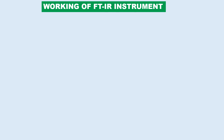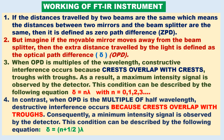Let us see the working of the FTIR instrument. If the distances traveled by the two beams are the same — that is, zero path difference — then constructive interference occurs. If the movable mirror moves away from the splitter, the extra distance traveled by the light is defined as the optical path difference, OPD, denoted by delta. When OPD is a multiple of nλ (n = 0, 1, 2, 3...), constructive interference occurs because crest overlaps with crest, and maximum signal intensity is observed by the detector.